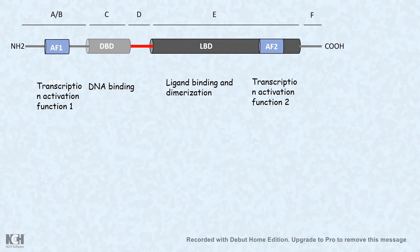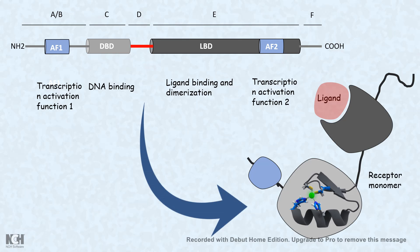From this structure, when it is transcribed and translated, it forms the nuclear receptor protein complex. Here we see a receptor monomer able to bind the ligand in the ligand binding domain or dimerization domain. The DNA binding domain consists of a zinc finger motif, which is an important DNA binding structure.